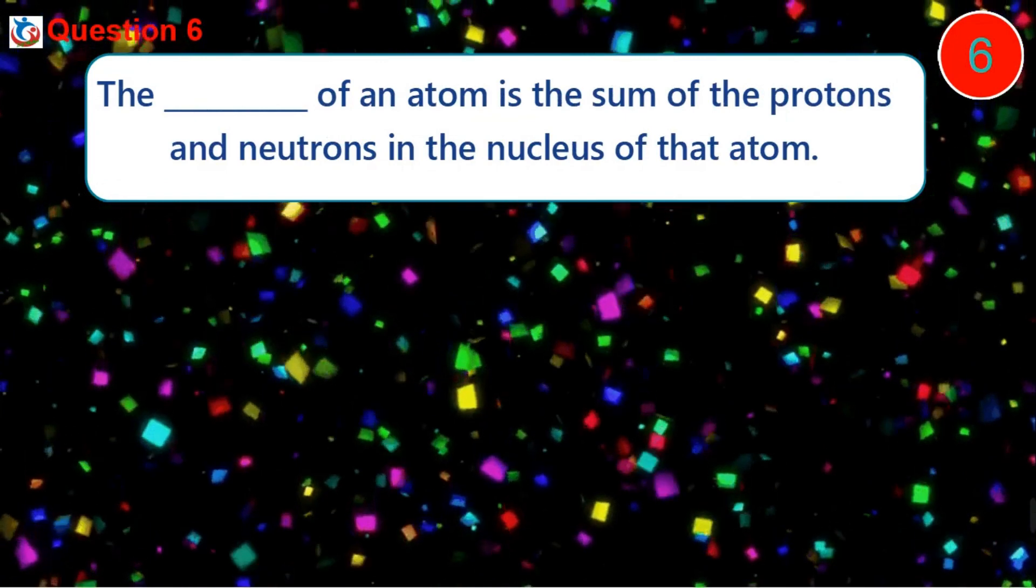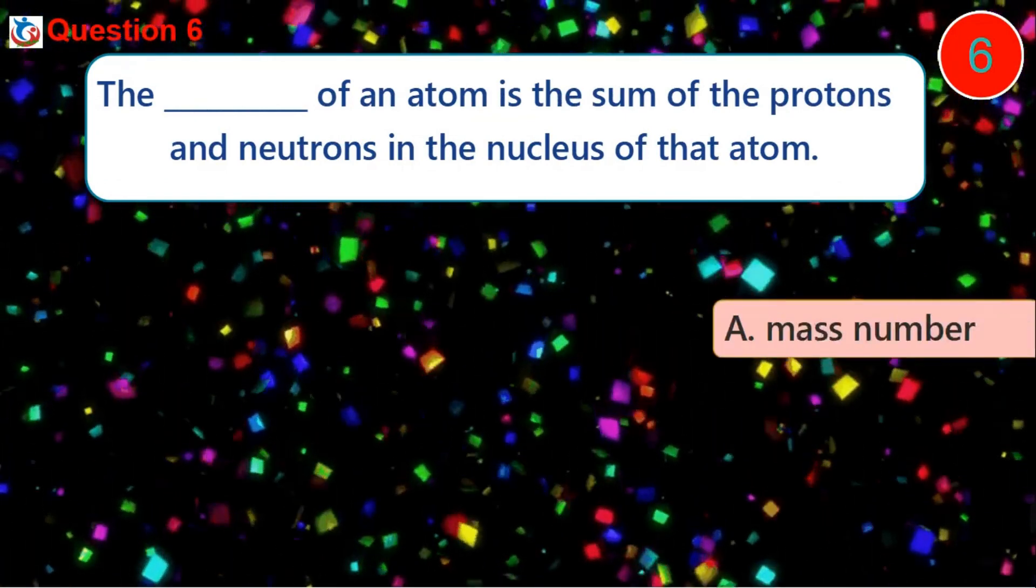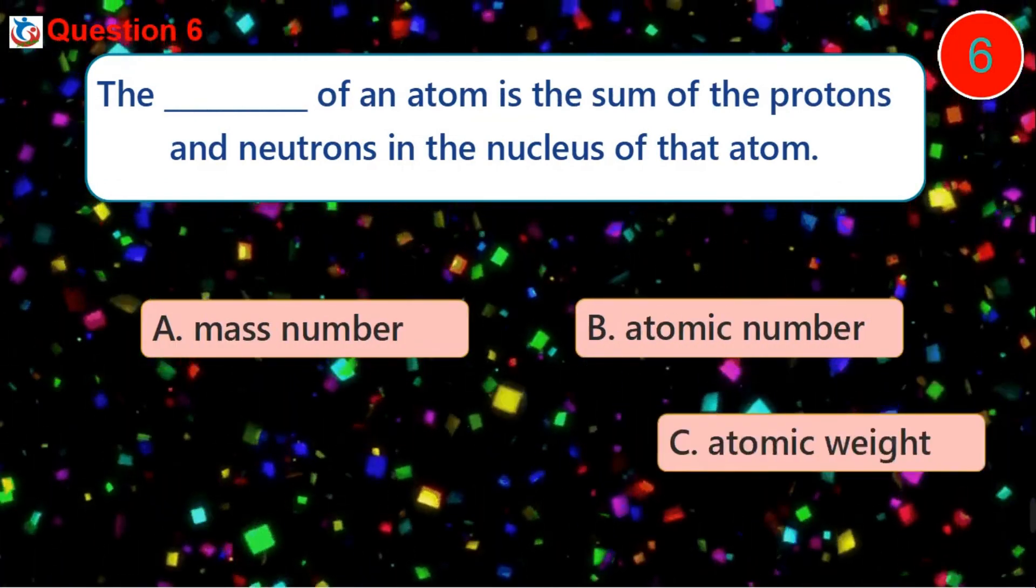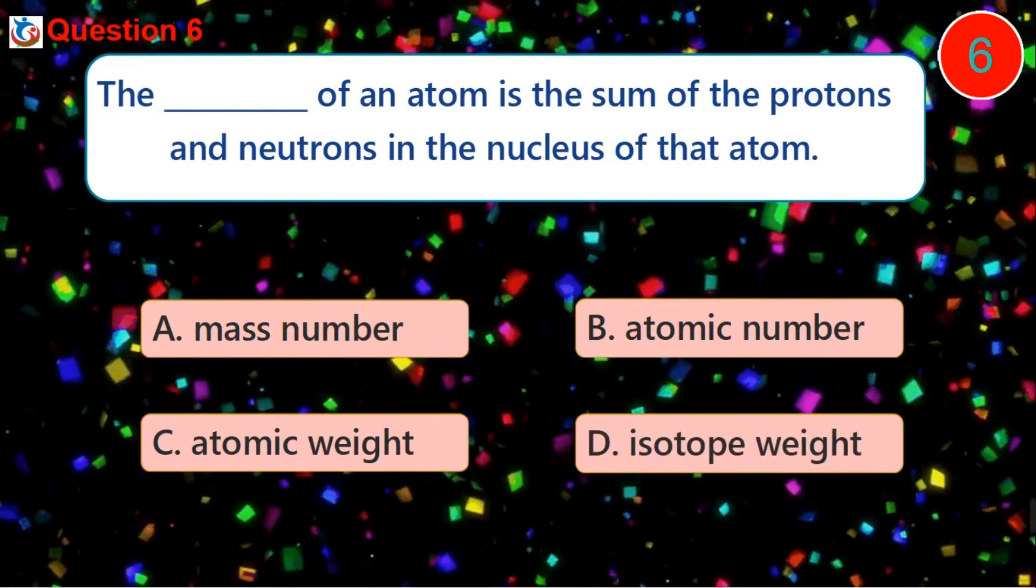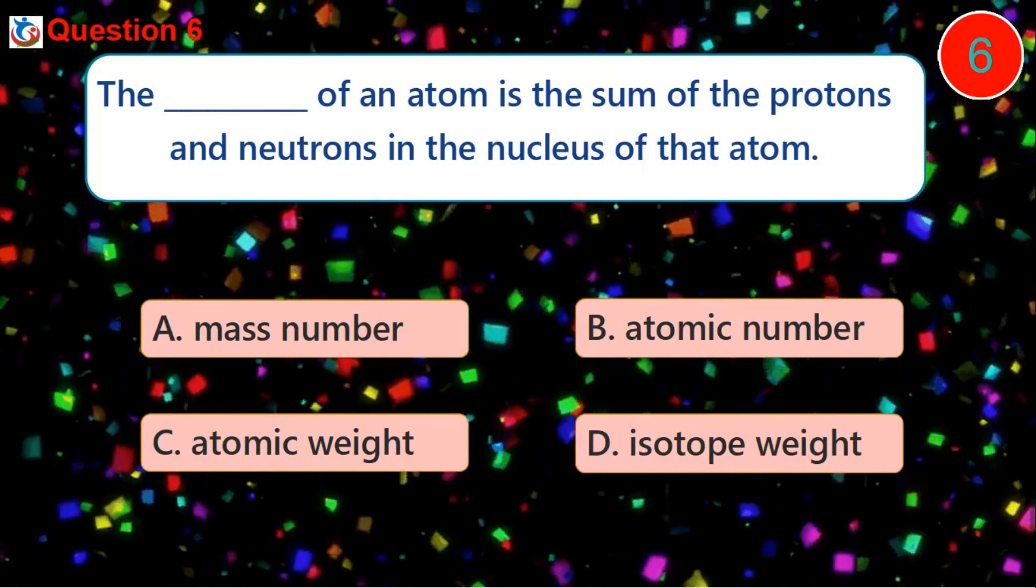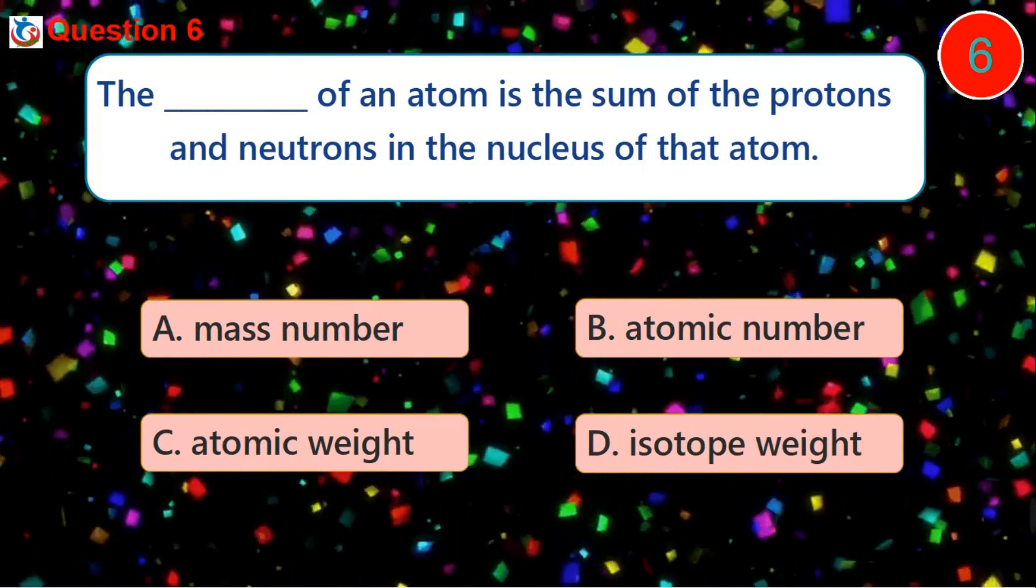Question 6. The dash of an atom is the sum of the protons and neutrons in the nucleus of that atom. A. Mass number B. Atomic number C. Atomic weight D. Isotope weight.